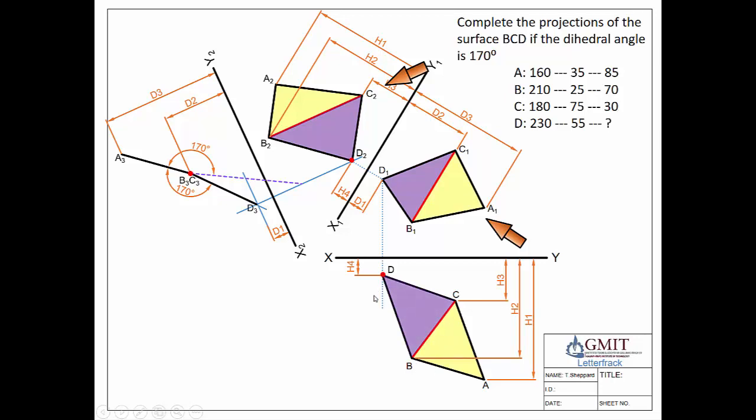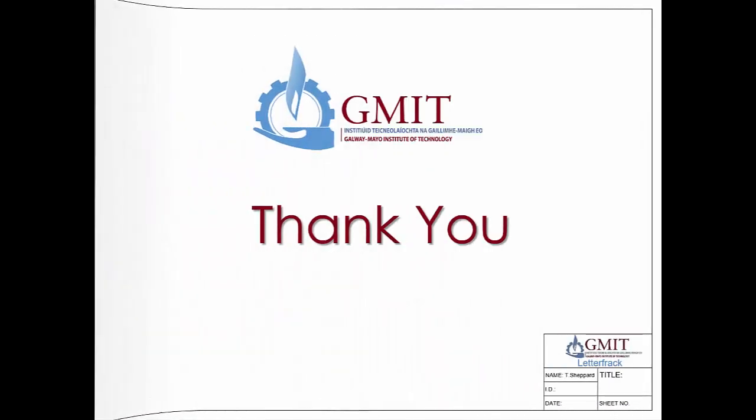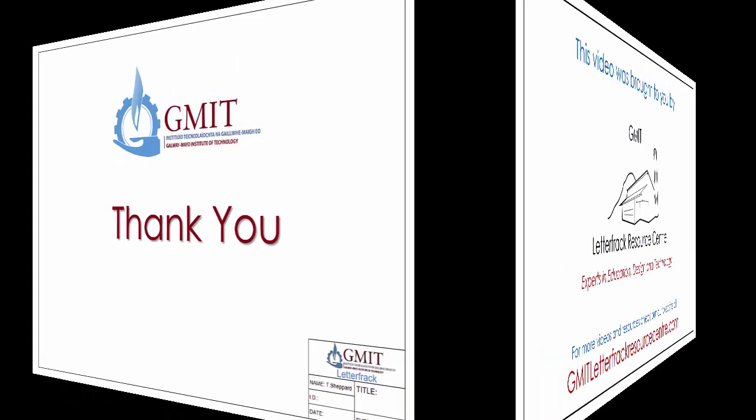Those are the two scenarios you're likely to face with this type of question. It really borrows from the concept of what is a dihedral angle and how we apply our 1-2 rule to get heights for each of our auxiliaries. Hopefully this has been of some use to you — stay tuned for the rest of the videos for more information. Thank you very much.